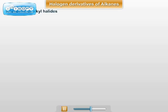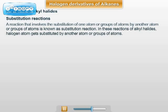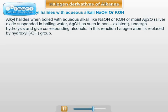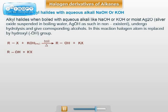Next part is reactions of alkyl halides. Alkyl halides show various types of reaction. The important reaction of alkyl halides is substitution reaction. Type 1: reaction of alkyl halide with aqueous alkali like NaOH or KOH undergoes hydrolysis and alcohol is obtained. In this reaction, the halogen atom is replaced by the OH group. The general reaction is: RX plus KOH aqueous, on boiling, forms alcohol and KX as the by-product.